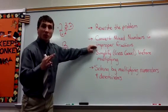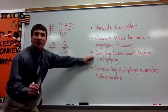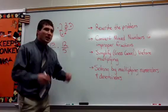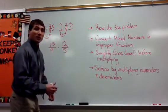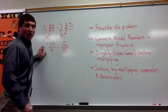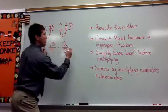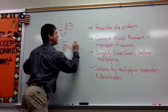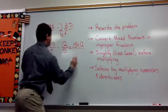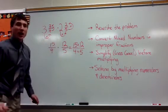Step number three when multiplying mixed numbers: we're going to simplify or cross-cancel before multiplying. Essentially what we're doing is factoring out one — we're just simplifying the fractions. Remember, this is equal to fifteen times twelve over four times five.